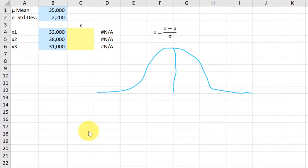Okay, I've opened up an Excel file, and I've entered the data that we're given, the mean mu of 35,000, the standard deviation sigma of 2,200, and then the three x-values, 33,000, 38,000, 31,000.